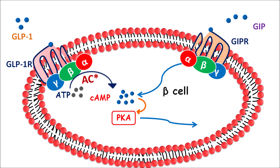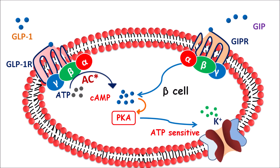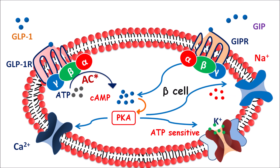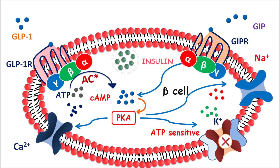Protein kinase A can control one of the ion channels — the ATP-sensitive potassium channel. Similarly, it can control the calcium channels on the beta cells as well as the sodium channels. Because of increased levels of protein kinase A, sodium can more readily enter the membrane. At the same time, potassium cannot go outside, resulting in increased depolarization which stimulates the entry of calcium into the cell, leading to further depolarization, thereby causing insulin to be secreted out of the beta cells.